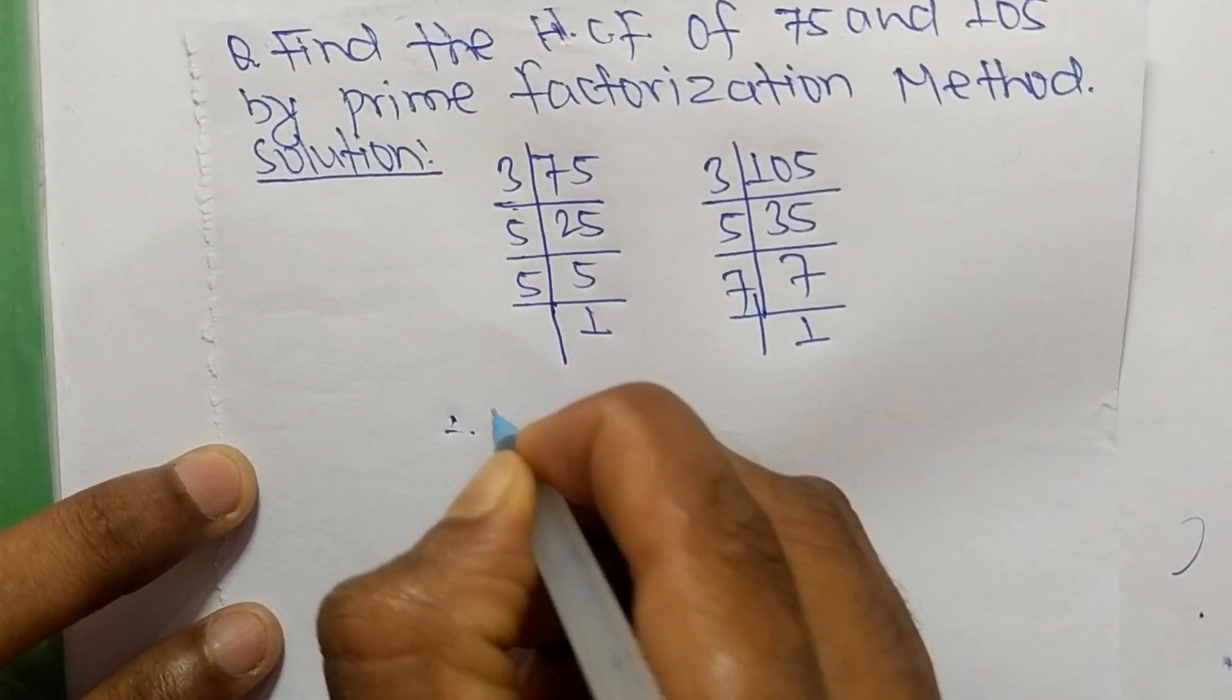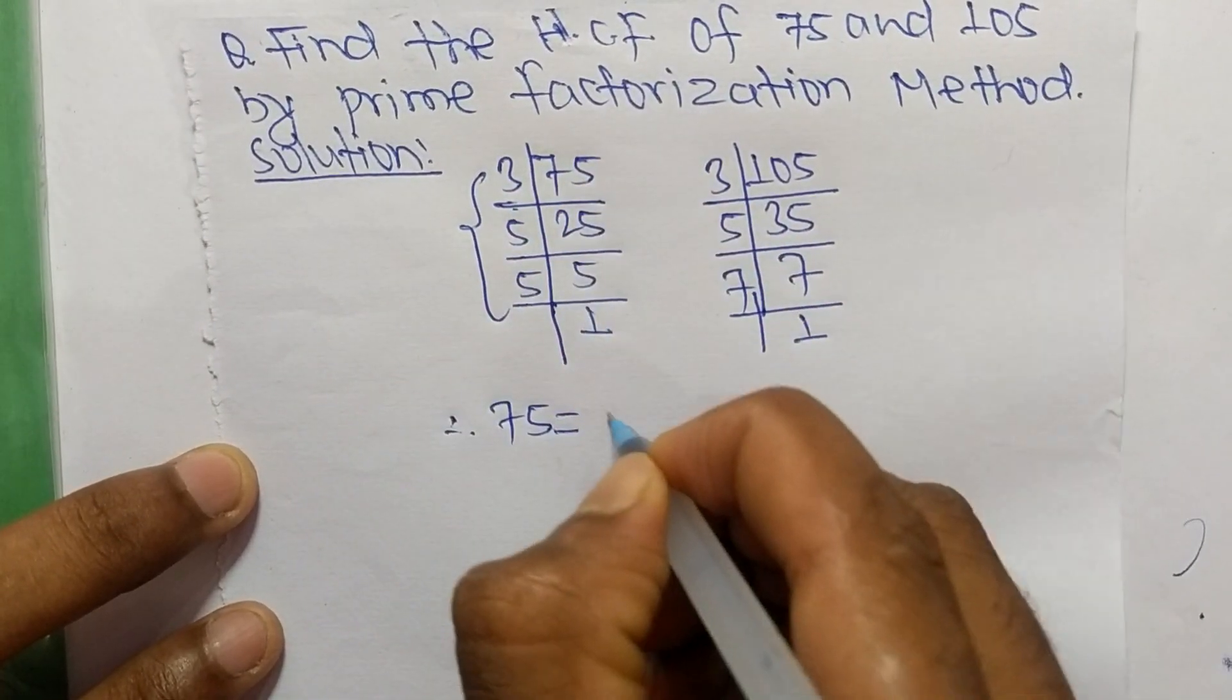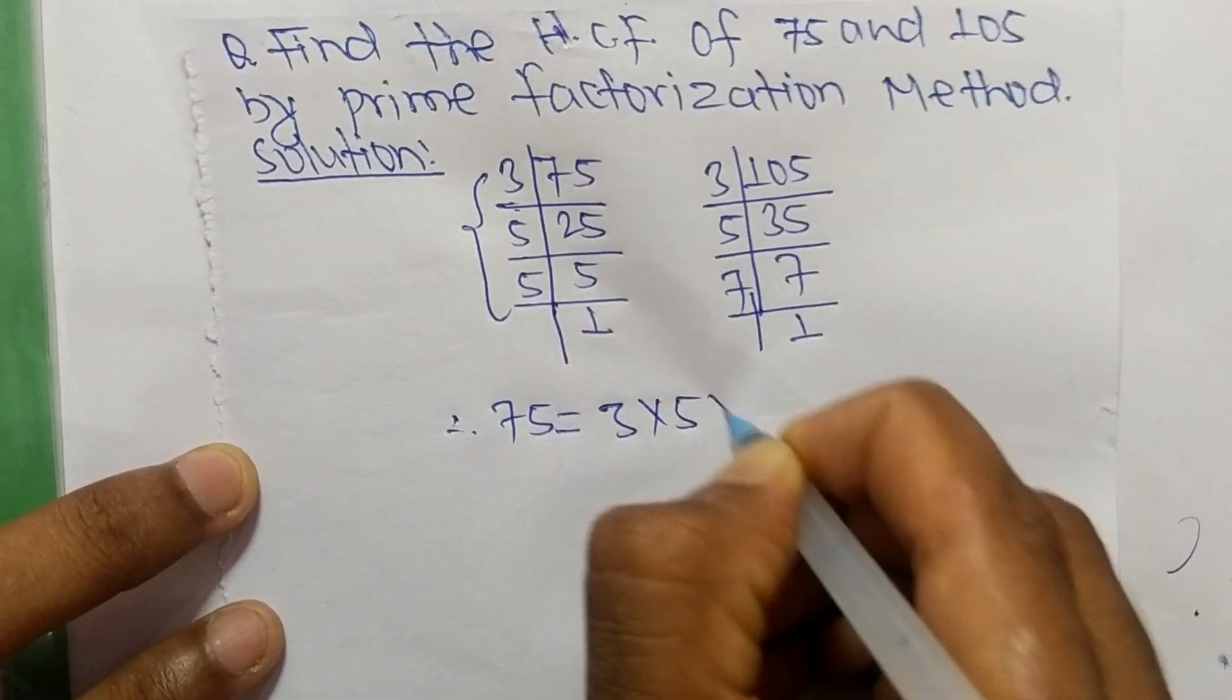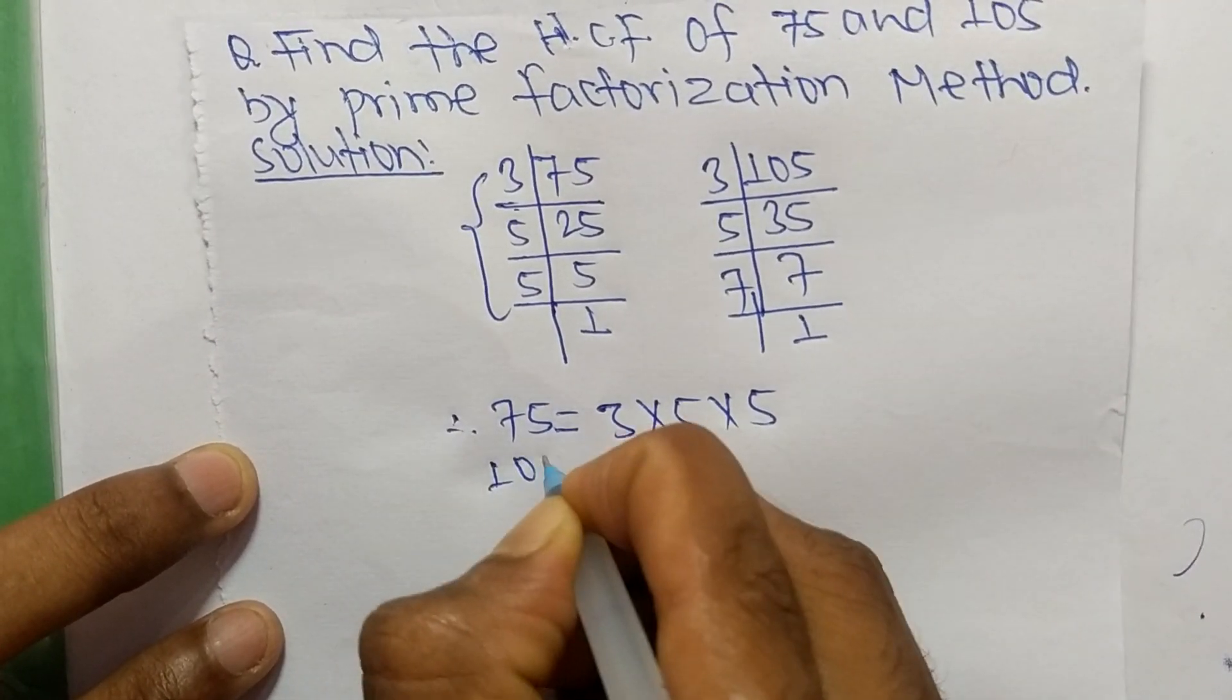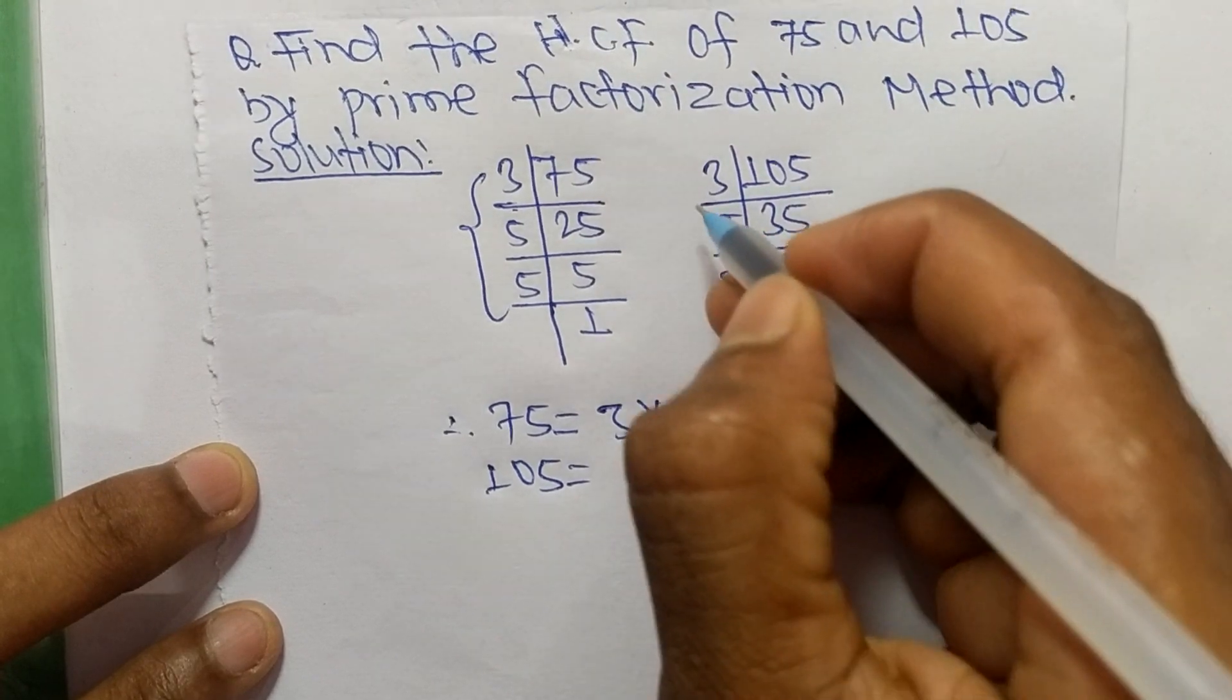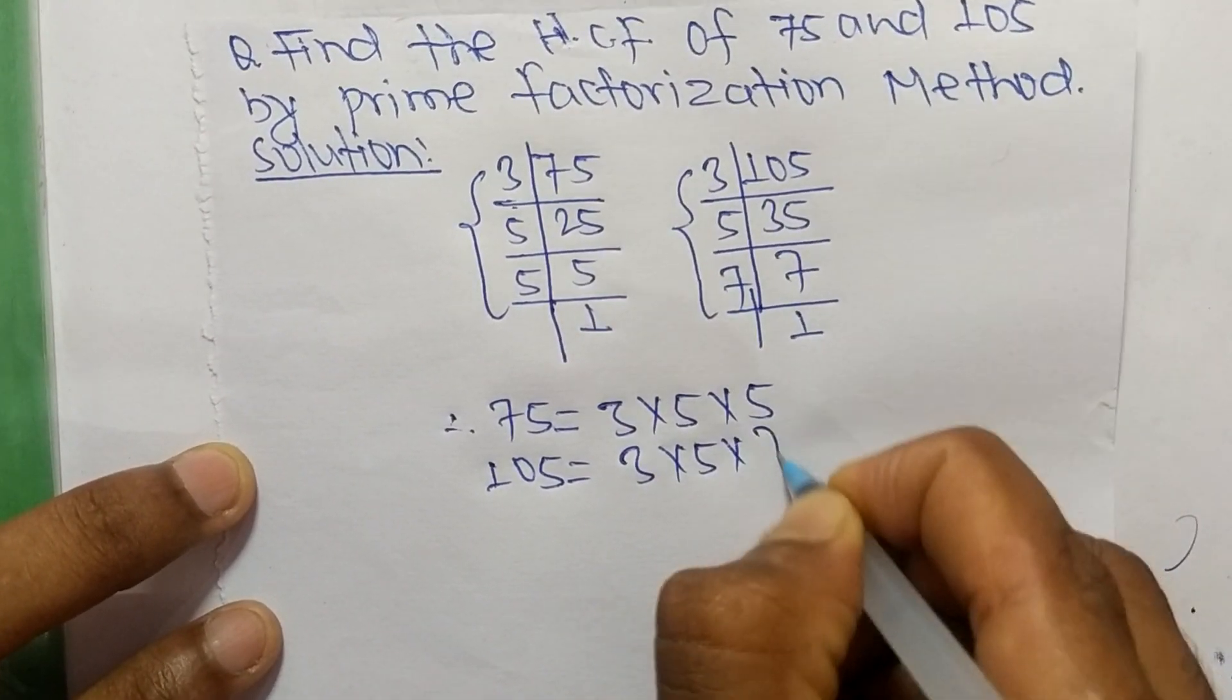prime factors, we can write 75 equals 3 times 5 times 5. Likewise, 105 equals 3 times 5 times 7.